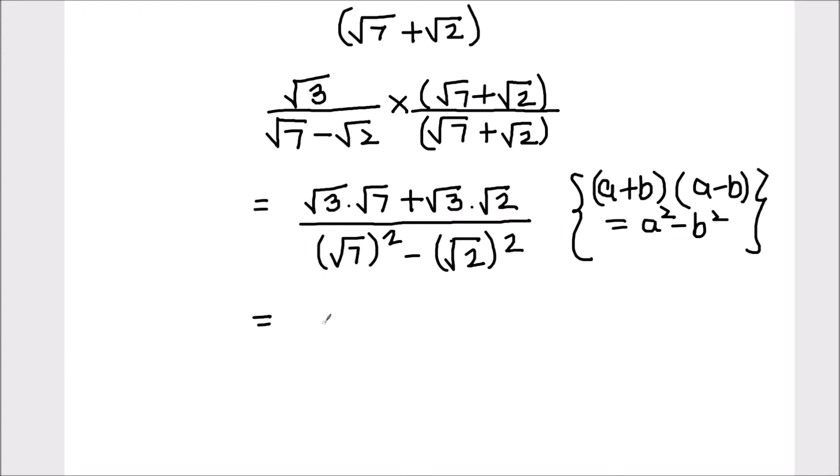So let's simplify it further. Root 3 times root 7 will be root of 3 times 7 plus root 3 times root 2 will be square root of 3 times 2 divided by root 7 square will be 7 minus root 2 square will be 2.